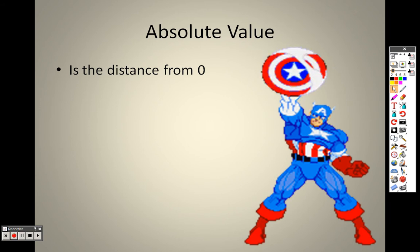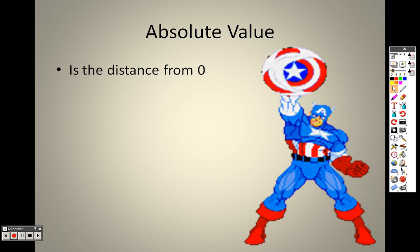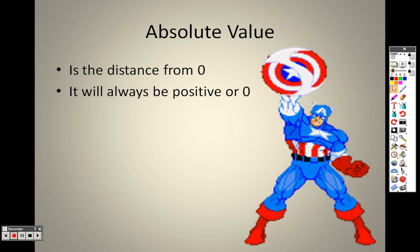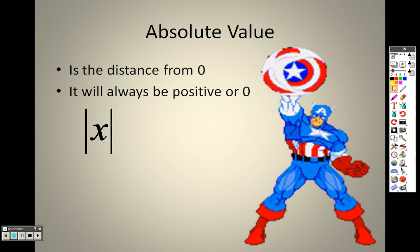Absolute value is the distance from zero. Since we're talking about a distance, it's always going to be a positive answer — or it could also be zero. Those straight bars on the outside are absolute value bars, not parentheses. Keep that in mind when you're doing these problems — that's what signifies an absolute value.